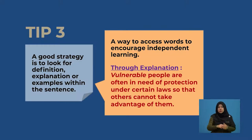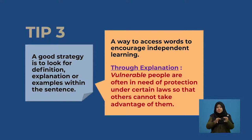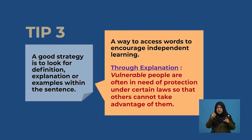Let's look at the word 'vulnerable.' You may not know the meaning of this word, so what you can do is read the explanation in the sentence to get an idea. Through explanation, for example: 'Vulnerable people are often in need of protection under certain laws so that others cannot take advantage of them.' Here, one can get some idea of the word 'vulnerable' by reading the explanation — people are often in need of protection.